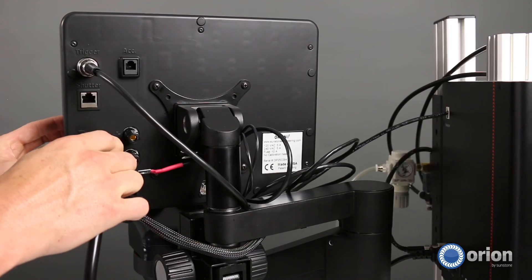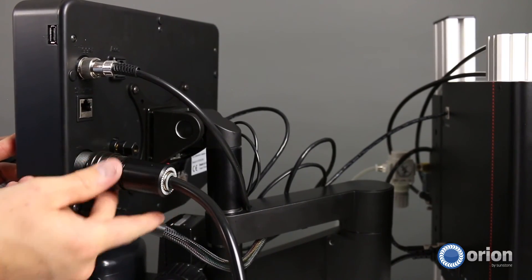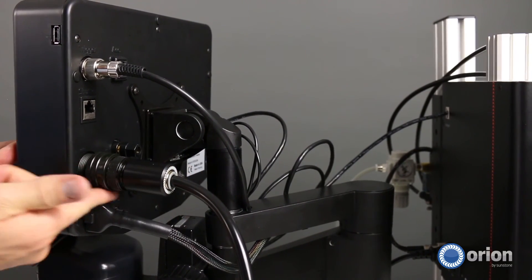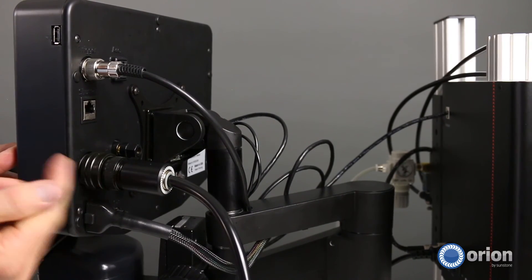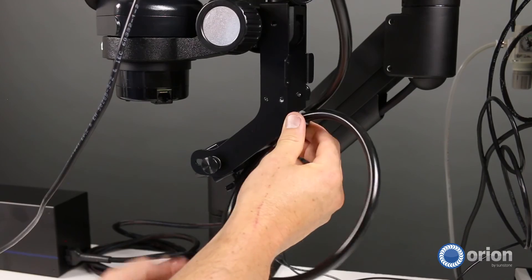Insert the stylus into the stylus port and push in until you can screw the stylus threads onto the stylus port. Continue to push and thread until the stylus is secure. Unscrew the dial at the bottom of the stylus holder and place the stylus into the holder.